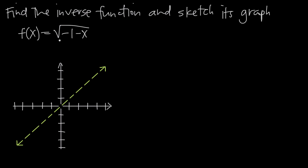Let's go ahead and sketch this graph by plotting points. When x equals 0, we get the square root of negative 1 minus 0, which is the square root of negative 1. That's undefined in terms of real numbers — we can only define it using imaginary numbers — so the function is not defined at x equals 0.